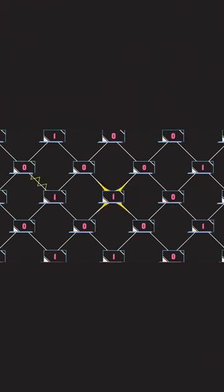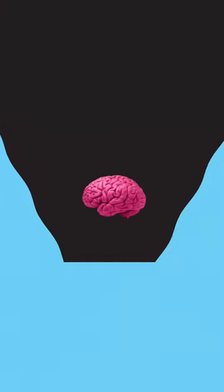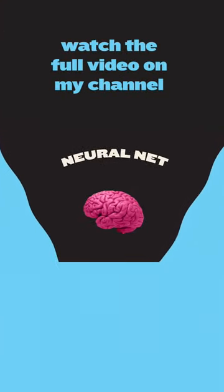So it follows that a large enough computer system, using Boolean ones and zeros instead of active and inactive neurons, could do a possible job of imitating the brain. This kind of system is called a neural net.